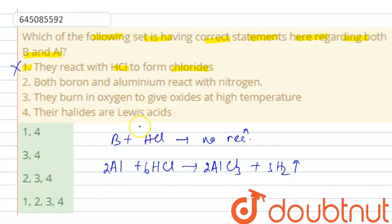Then next is both boron and aluminium react with nitrogen. Yes, both boron and aluminium react with nitrogen forming nitrides.